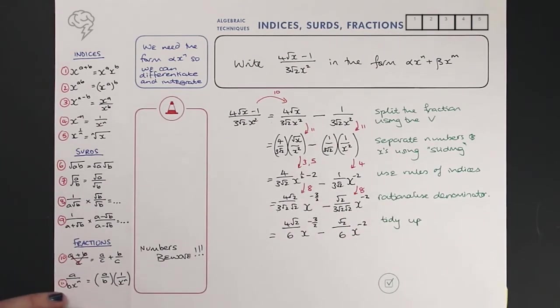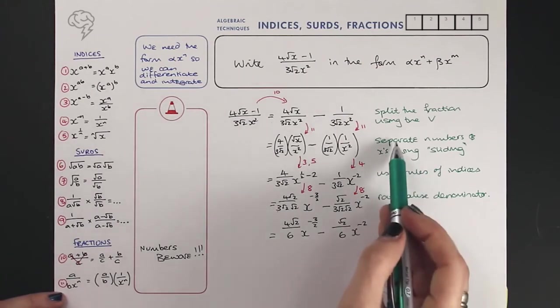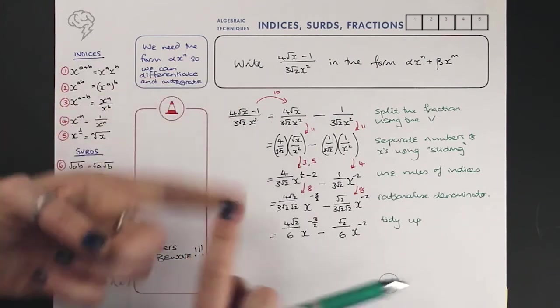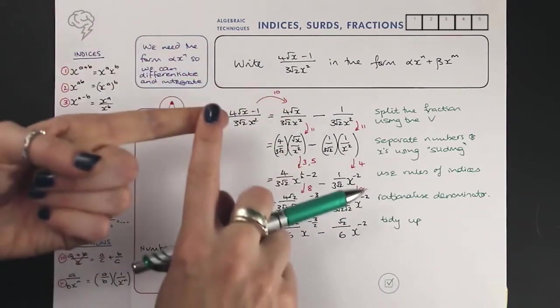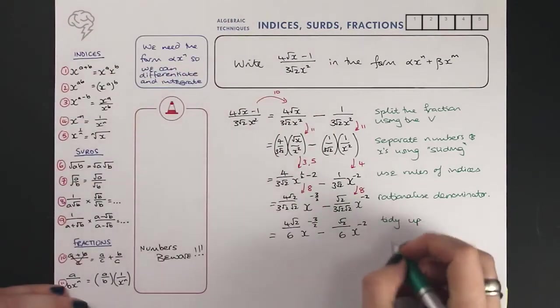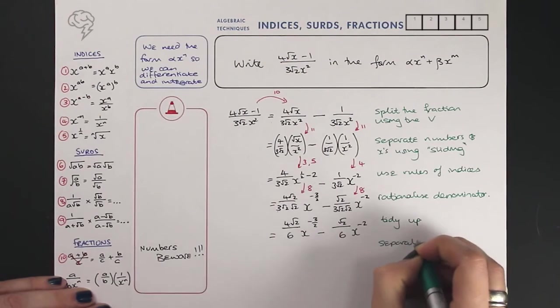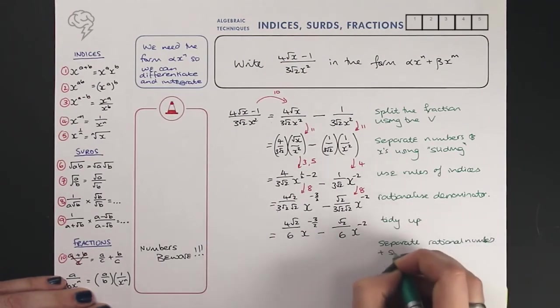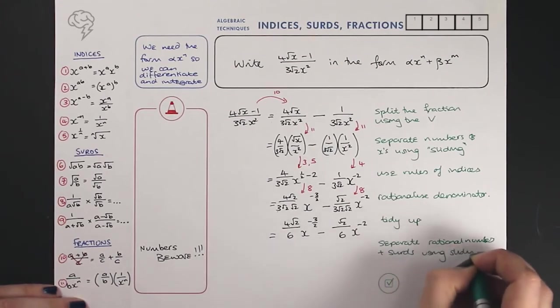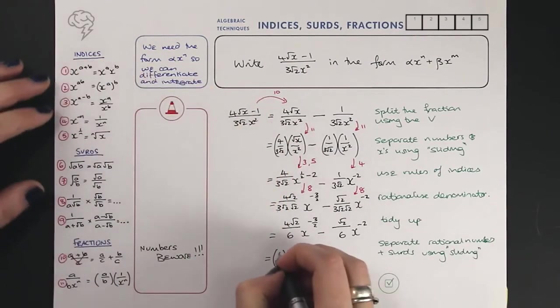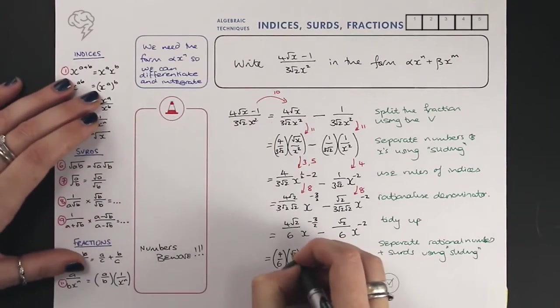Very last thing we need to do is to separate. Just like we separated the numbers and the x's using sliding, we can now separate out the rational numbers, so ones that can be written as a fraction, with the surds. Rational numbers sliding to the left, surds sliding to the right. Here's our sliding method, so our numbers slide to the left, and our surds slide to the right.